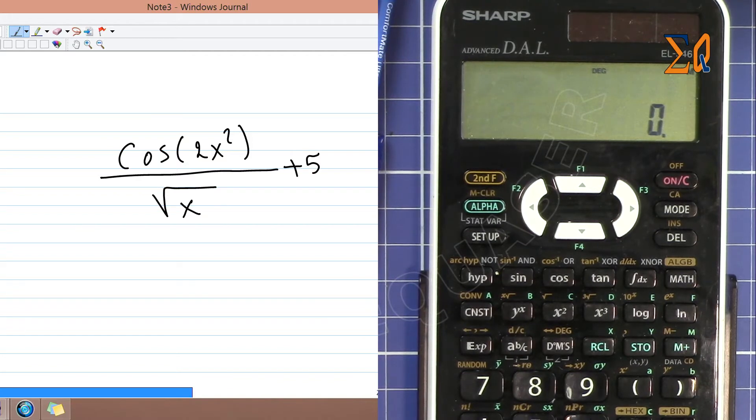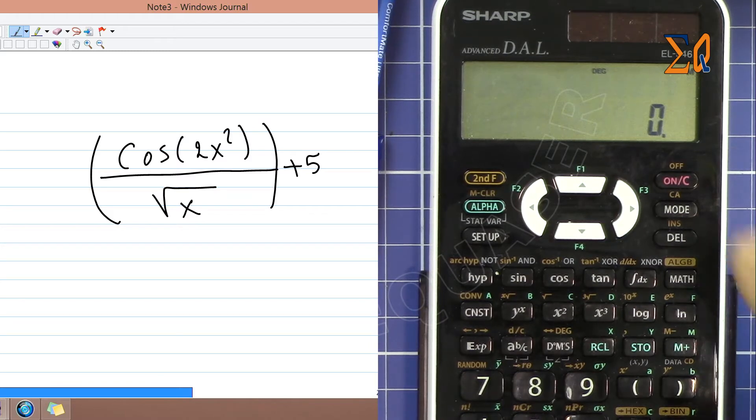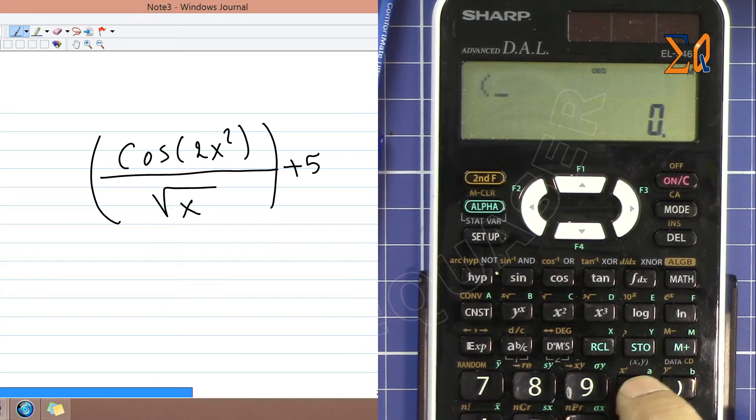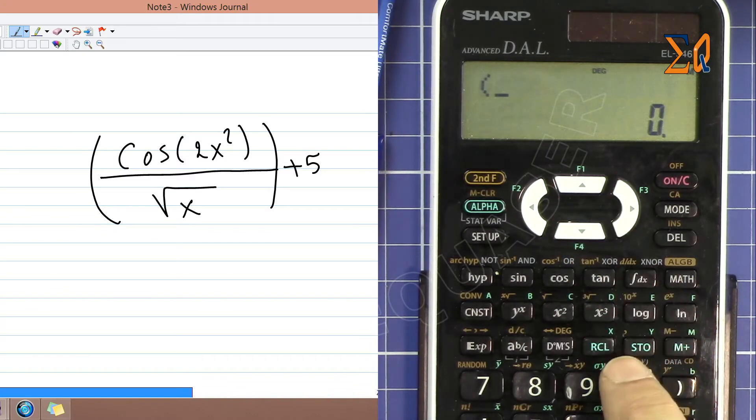And you want to store it in the memory. So we have to know that we have this value and then we have one more parenthesis plus 5. So open a parenthesis first, that's a main parenthesis.